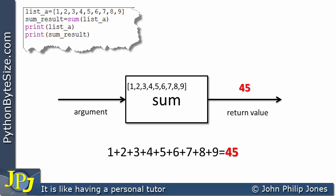The 45, which is the result of the addition, comes out, and this is the return value. This return value will be returned to here in the program, and sum_result will be associated with the value of 45.